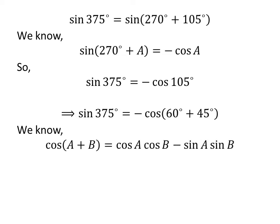We know the cosine addition identity: cosine of A plus B is equal to cosine of A times cosine of B minus sine of A times sine of B.